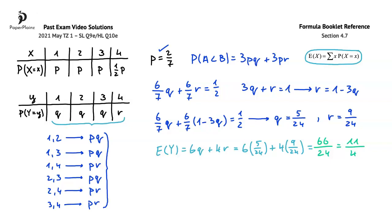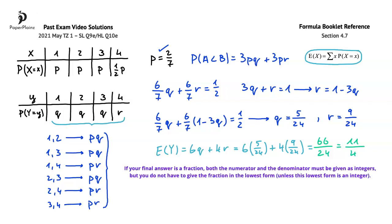Let's see two exam-taking tips to help you earn full marks on similar questions. The first one is that if your final answer is a fraction, both the numerator and the denominator must be given as integers, but you don't have to give the fraction in the lowest form unless this lowest form is an integer. So here for instance, I could have left my final answer as 66 over 24. I actually encourage students not to simplify fractions, because simplifying takes time and you might also make a mistake.